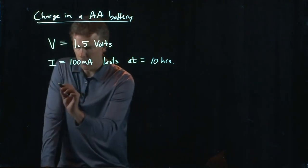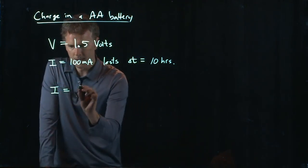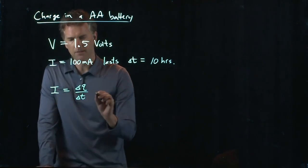So what do we know? We know I, current, is ΔQ over ΔT.